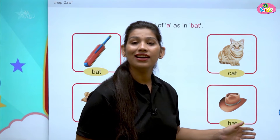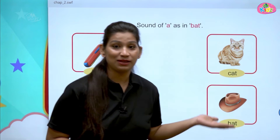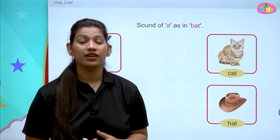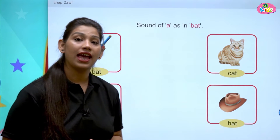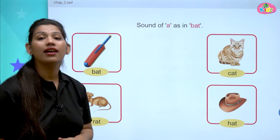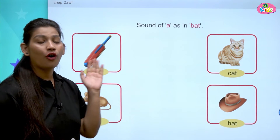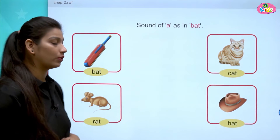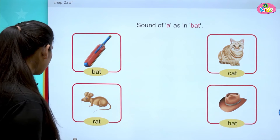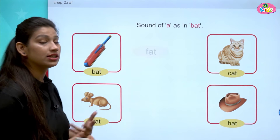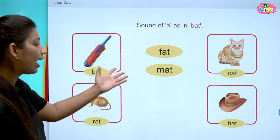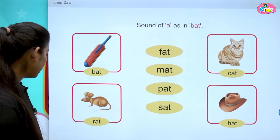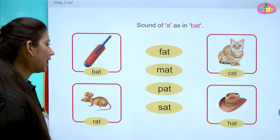H, A, T — Hat. H says H, A, T — Hat. All of the words are with the AT sound. Let us understand more words with AT sound like Fat, Mat, Pat, Sat.